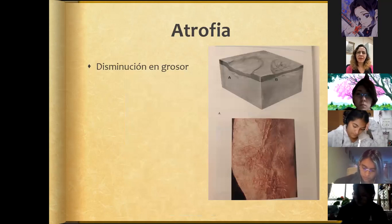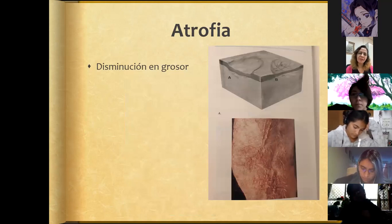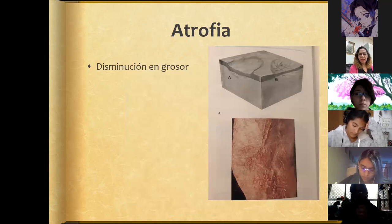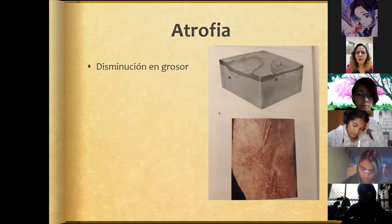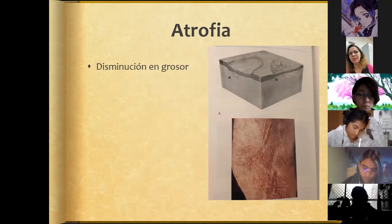Atrophy means a decrease in thickness of the skin layers — from the epidermis and dermis down to the subcutaneous cellular tissue — and can therefore appear as a sunken or depressed area, or as very thin skin through which blood vessels are transparent.